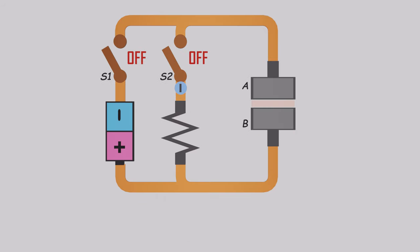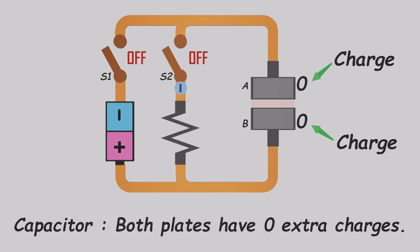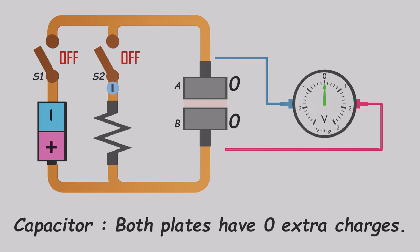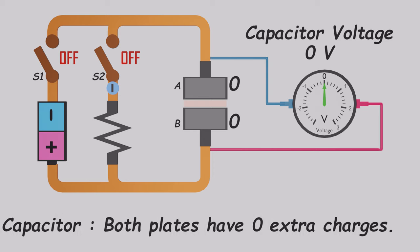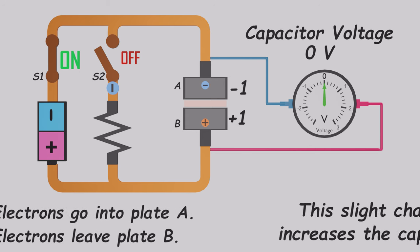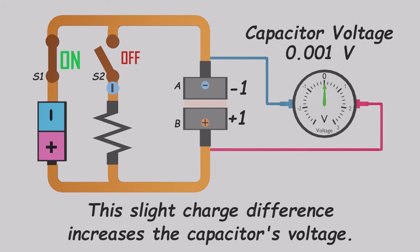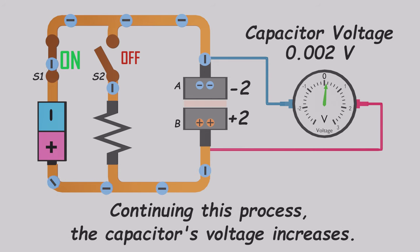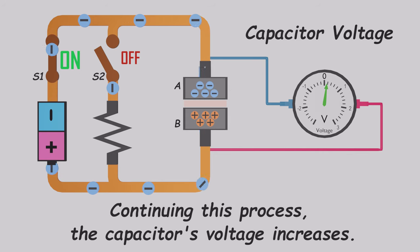We've modified our circuit to observe capacitor charging and discharging. Initially, both plates are charge neutral, resulting in zero capacitor voltage. If we turn on switch S1, current will flow and the capacitor will start to charge. When one electron moves to plate A, its charge becomes minus one, and another electron leaving plate B brings its total charge to plus one. This slight difference in charge causes an increase in the capacitor's voltage. Continuing this process alters the total charge on both plates, consequently increasing the capacitor's voltage.